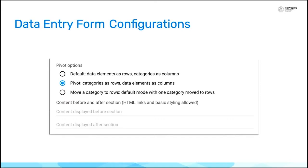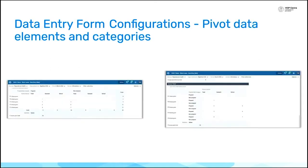So there's now in each section form an option to pivot the category rows and data elements if you'd like. We've got an example here — if you select for a certain section that you want to pivot the data elements and categories, it will switch which ones are in the columns with which ones are in the rows. Sometimes if you have a lot of choices it can be really powerful to change the orientation to make it easier for the data collectors.